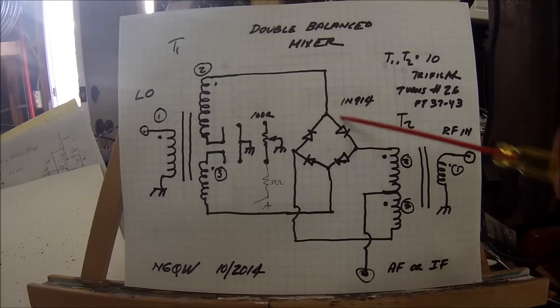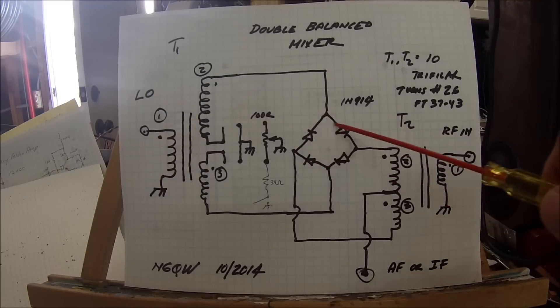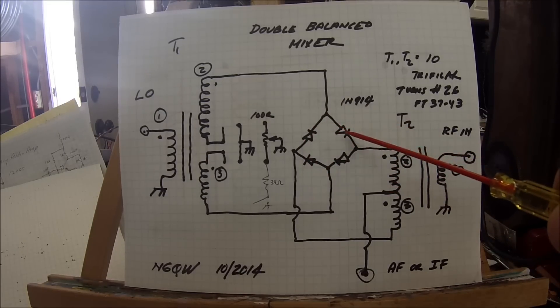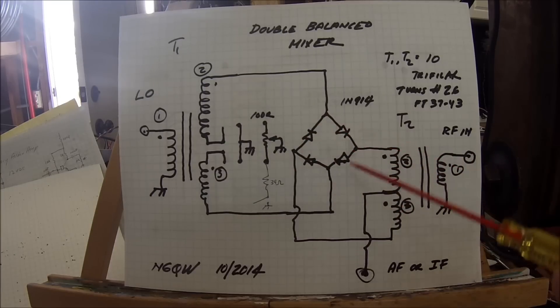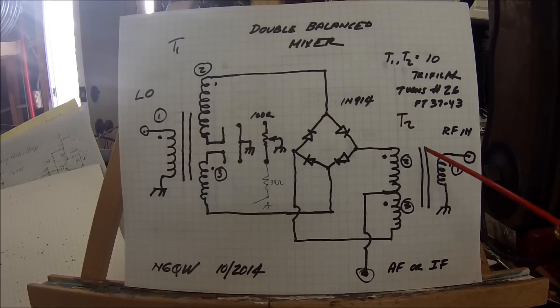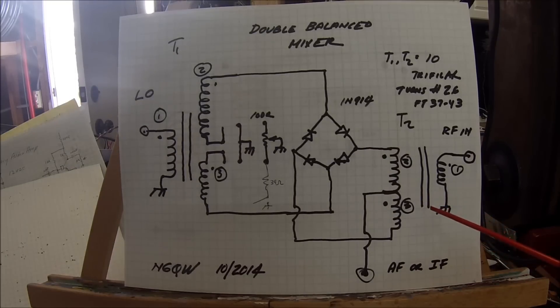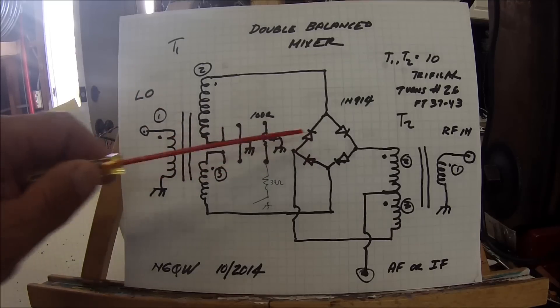We have four diodes, in this case 1N914s, that are arranged in a fashion of a ring modulator. Notice it's head-tail, head-tail, head-tail all the way around. That's why they call it a diode ring. On the output side we have another tri-filar wound transformer.